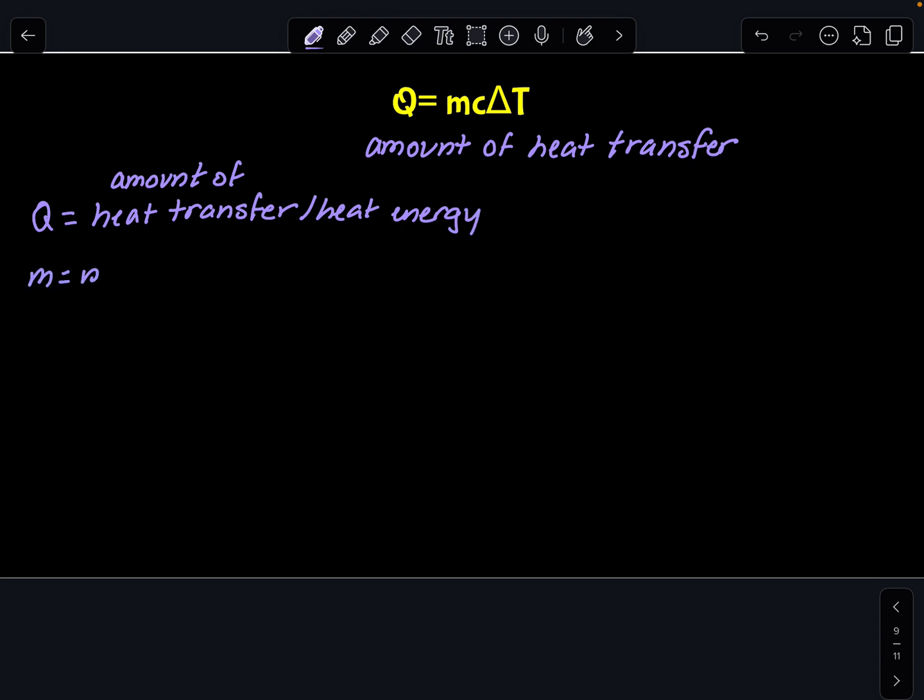M stands for mass. Oftentimes it's given in kilograms, but it could be in grams. C is the specific heat. And specific heat is how much energy it takes to raise that substance up by one degree Celsius.